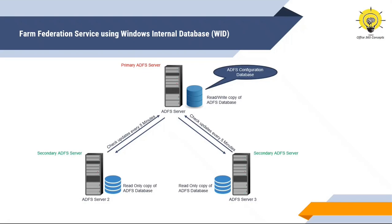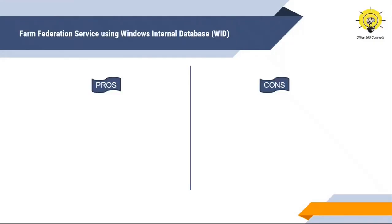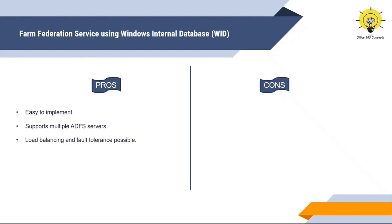In Farm Federation Service with WID, if the primary ADFS server goes down, you can promote a secondary ADFS server as primary. This type of deployment has some advantages and disadvantages. Farm federation service with WID is easy to deploy. We can install multiple ADFS servers within the farm. We can deploy load balancing servers to equally distribute traffic. And if one ADFS server goes down, we can make another server primary.